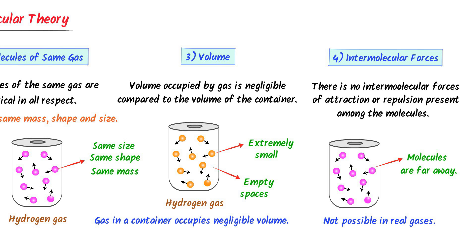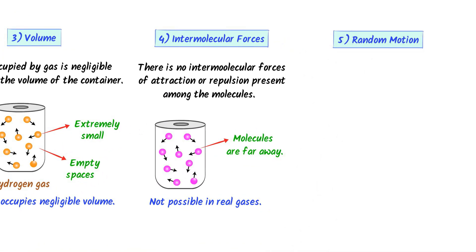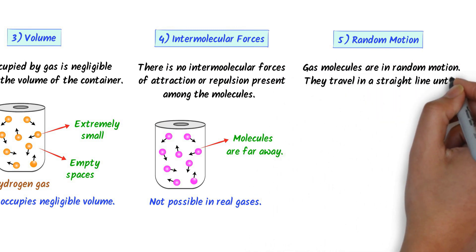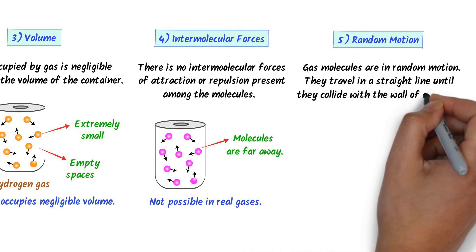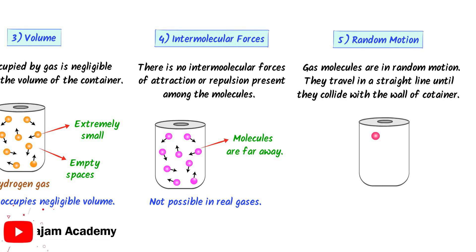The fifth postulate of the Kinetic Molecular Theory of Gases is about the random motion of molecules. It states that gas molecules are in random motion — they travel in a straight line until they collide with each other or with the wall of the container. After collision with the wall of the container, the molecule will recoil and move in the opposite direction.